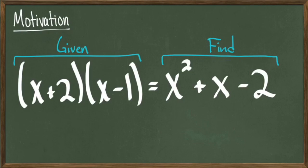Generally you're given the information on the left hand side and asked to compute the polynomial on the right hand side. Now the question is, can I reverse this process? In other words, if I were given x squared plus x minus 2, how would I factor it so that I end up with the left hand side?